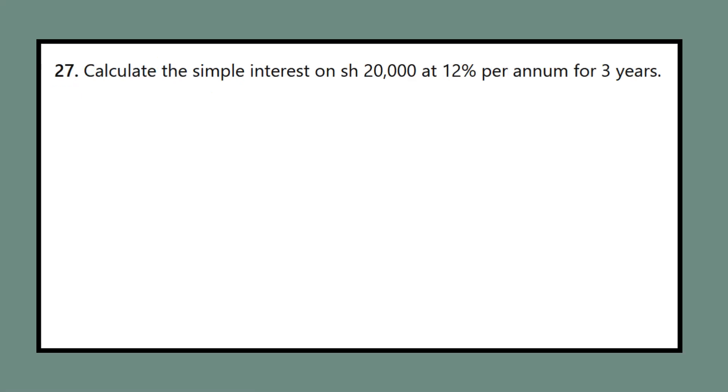Question 27: Calculate the simple interest on SH-20,000 at 12% per annum for three years.